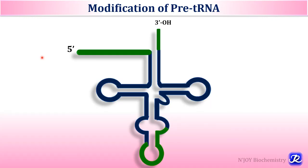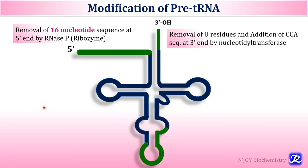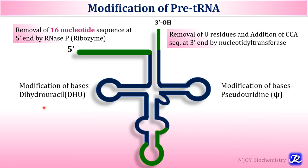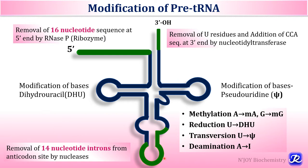The primary tRNA transcript is very large because it contains extra nucleotides at the 5' and 3' ends, introns are present in the anticodon loop, and the bases are unmodified. Post-transcriptional modifications include: removal of a 16-nucleotide sequence at the 5' end by RNase P; removal of uracil residues and addition of CCA sequence at the 3' end by nucleotidyl transferase; base modifications such as reduction of U to dihydrouracil, formation of pseudouridine, methylation, and deamination; and removal of 14-nucleotide introns from the anticodon site by nucleases.